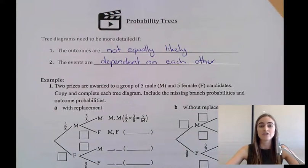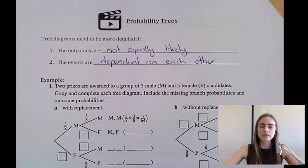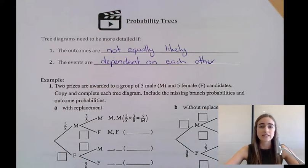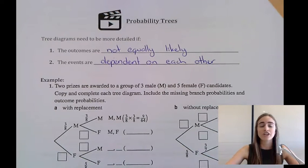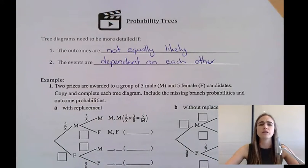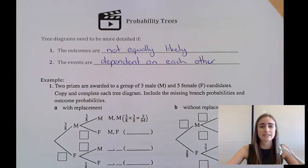In this video, I want to have a more detailed look at probability trees. We started looking at tree diagrams a little bit earlier in our last lesson. But in those tree diagrams, every outcome was equally likely — things like flipping a coin, where heads and tails are equally likely, or rolling a dice, where each number is equally likely to occur. In a lot of situations, that won't be the case — one outcome may be more likely than another.